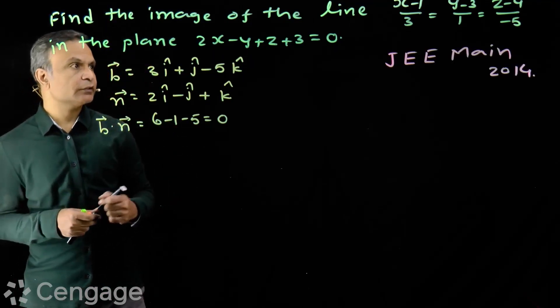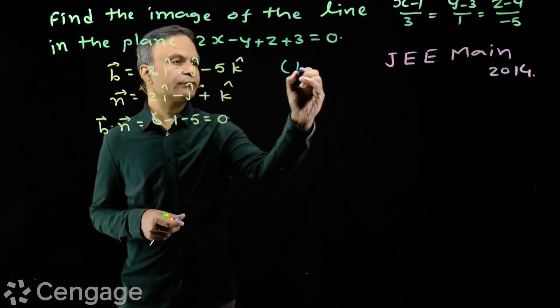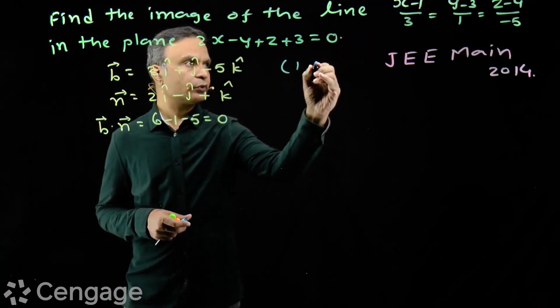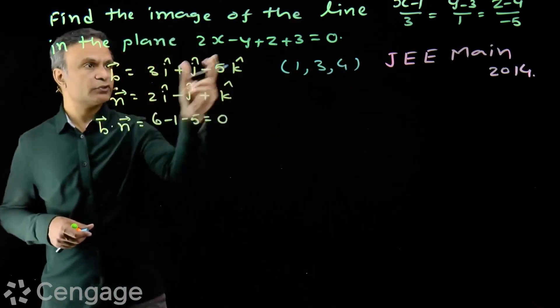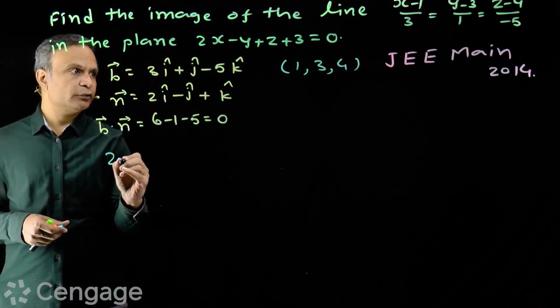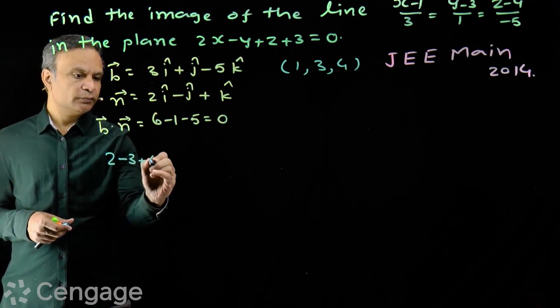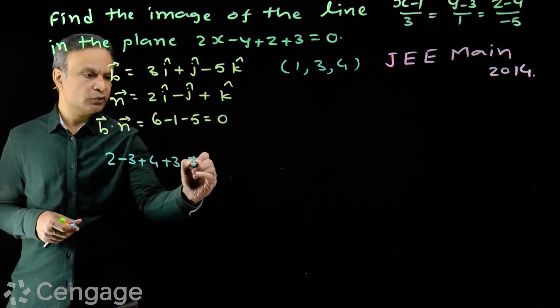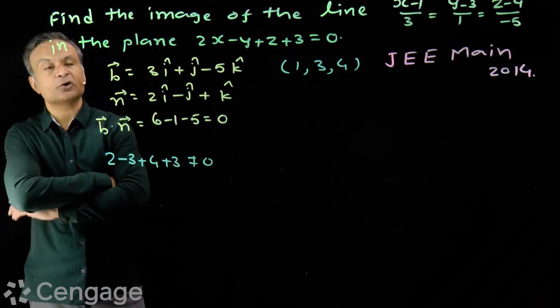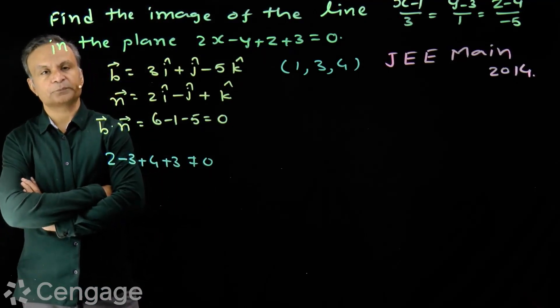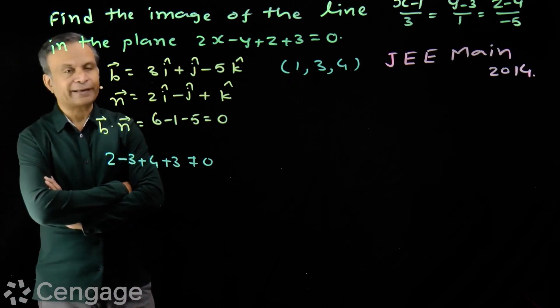We consider point lying on the line. Line is passing through point having coordinates 1, 3 and 4. We put these coordinates in the equation of plane. We get 2 minus 3 plus 4 plus 3. This is not equal to 0. So, point is not lying on the plane. So, line is not lying on the plane. So, line is parallel to the plane.